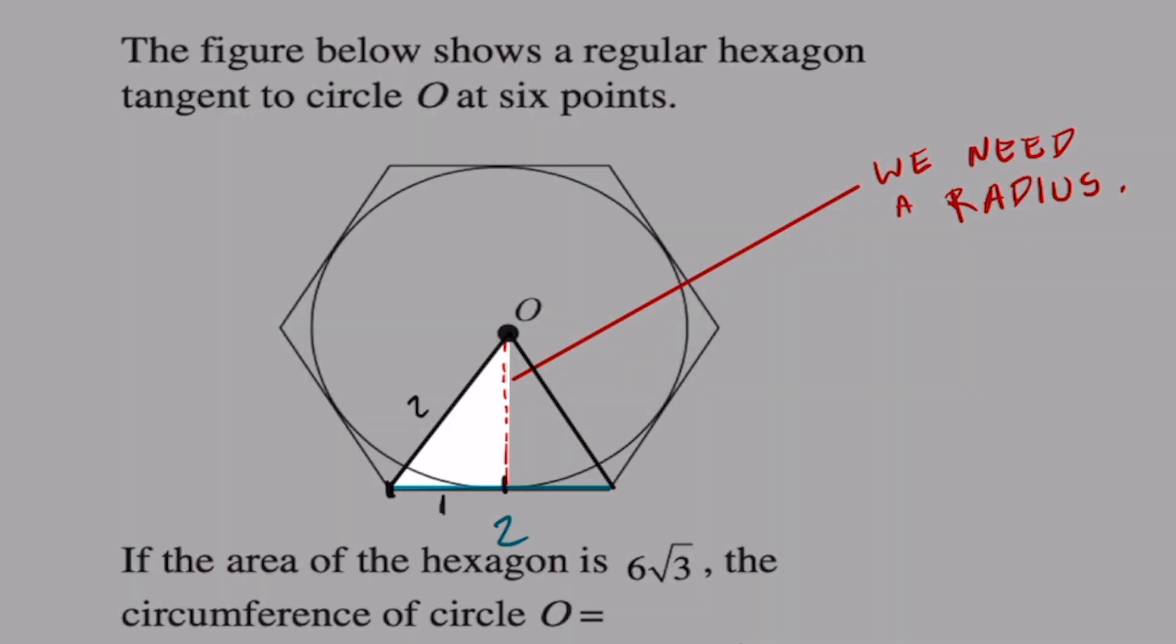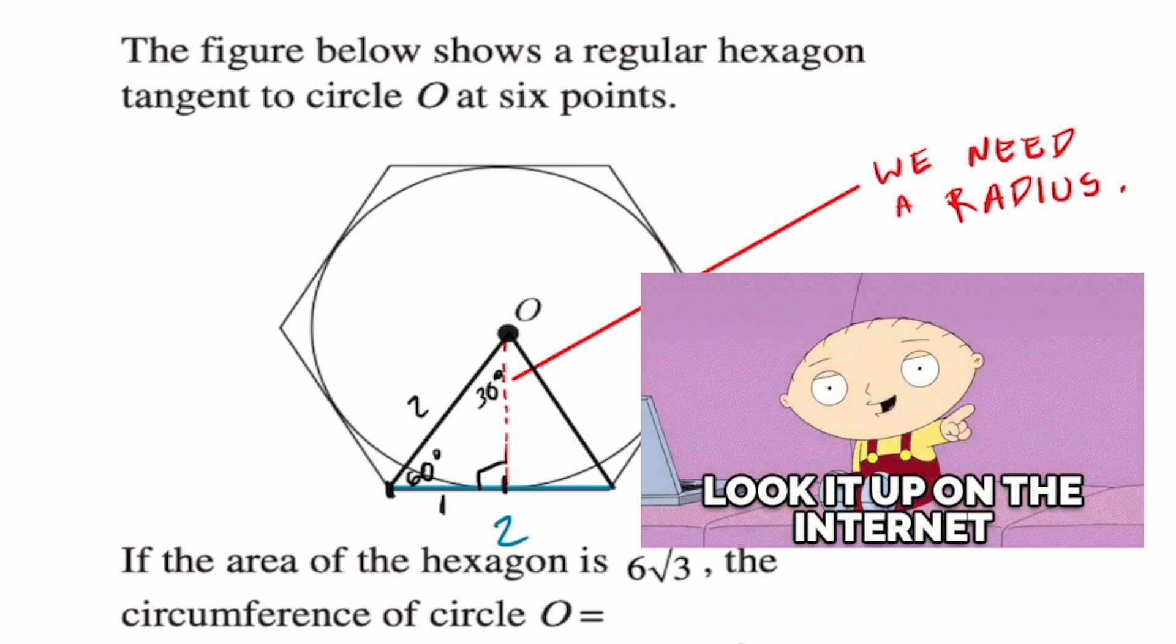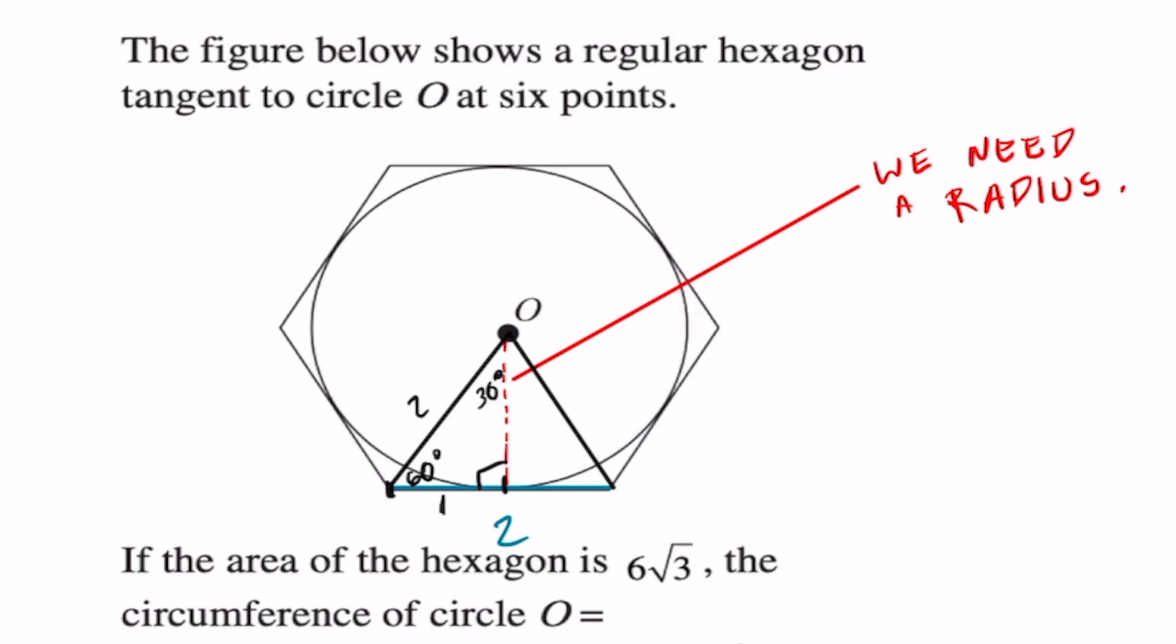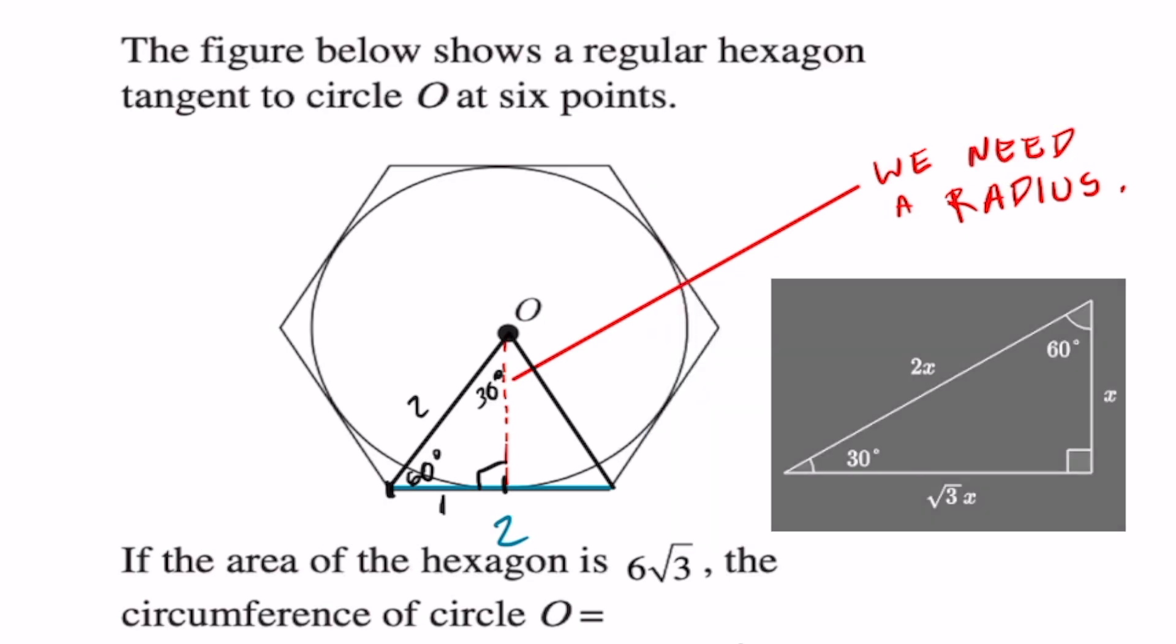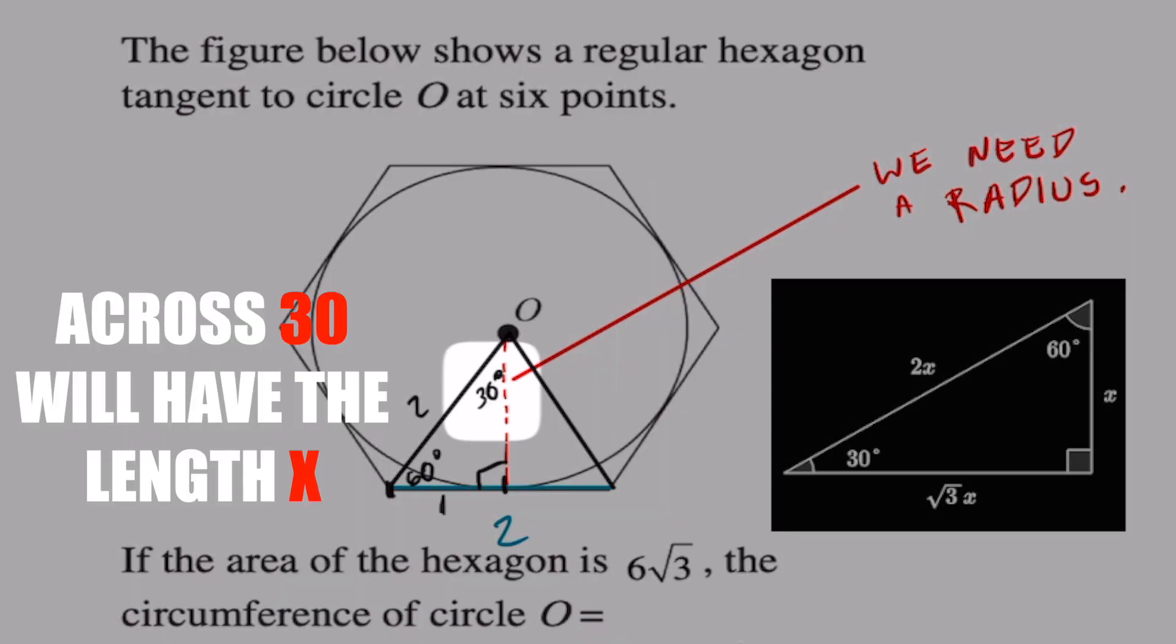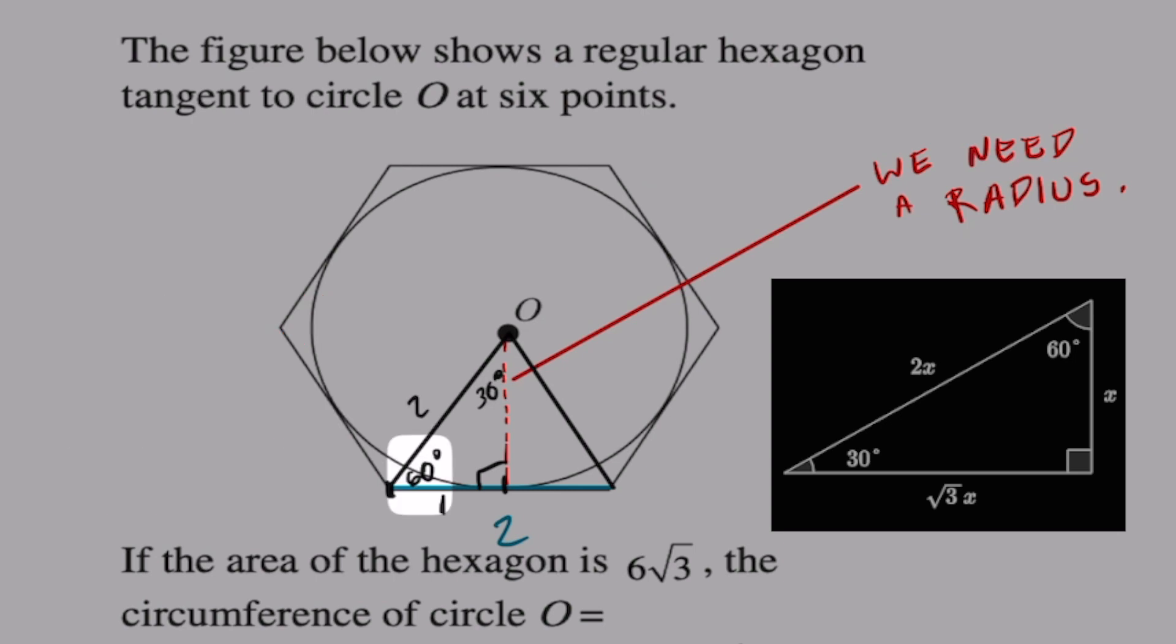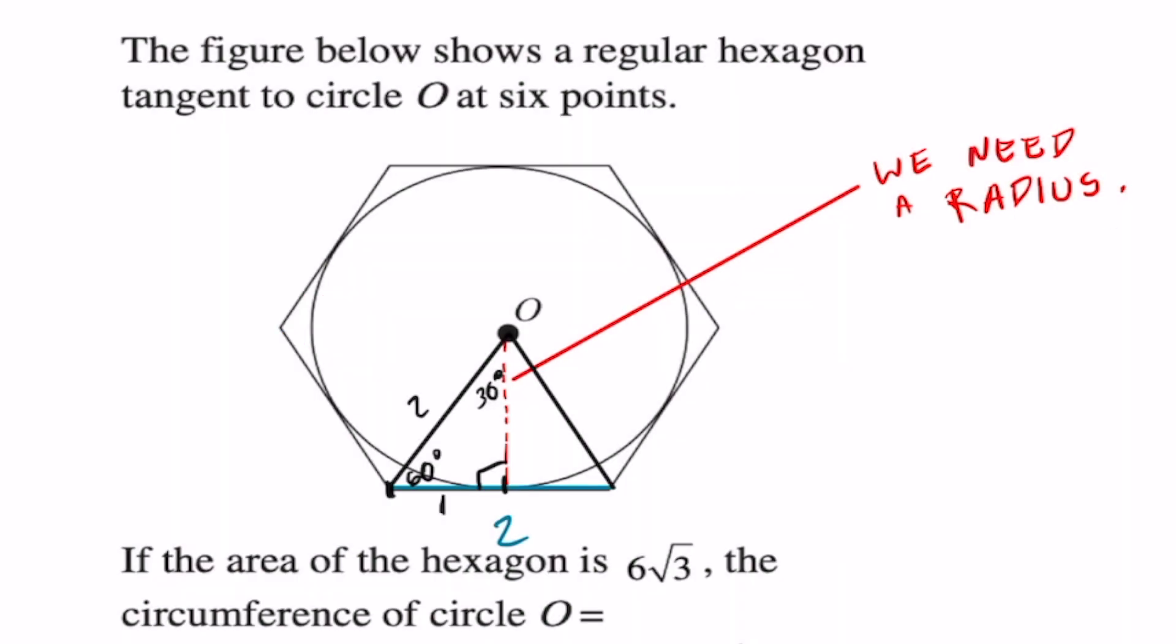Second thing is that each one of these triangles is going to be a 30-60-90. I'm not going to explain that proof; if you're curious, you could just look that up. In a 30-60-90 triangle, it has this special relationship where the side across from 30° is x, the side across from 90° is 2x, and the side across from 60°, which is our radius, is x√3.